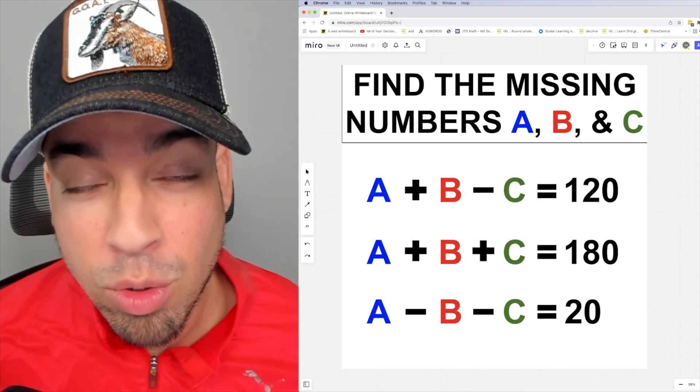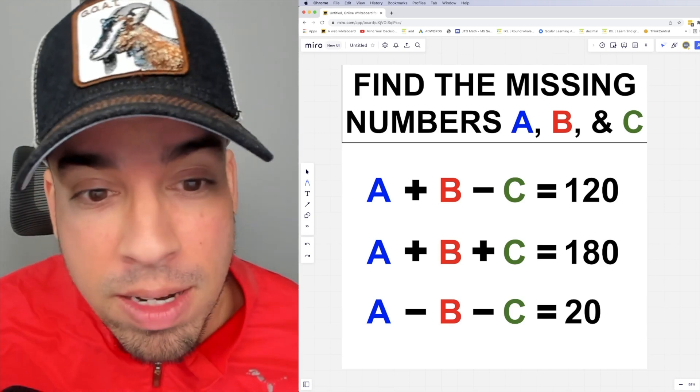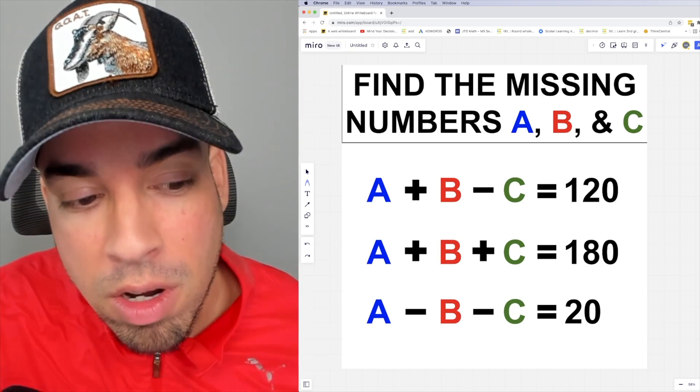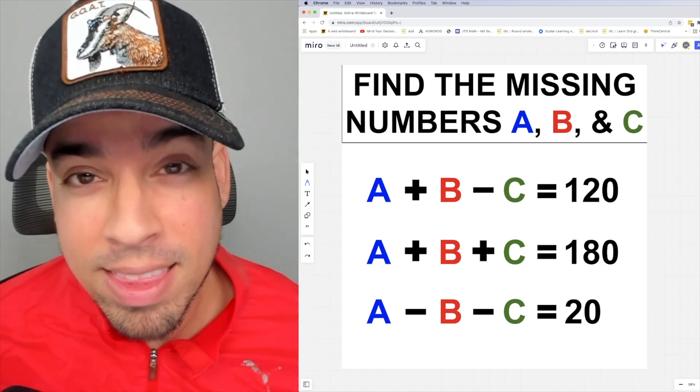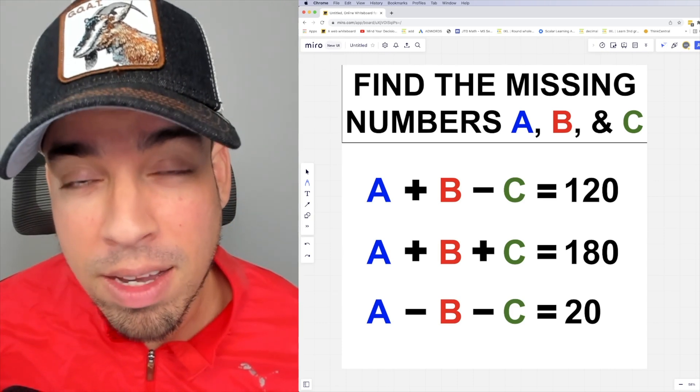What's up everybody and welcome back to another math puzzle. In this one, the question is as follows: find the missing numbers A, B, and C. What we've got are three algebraic equations with A, B, and C. Hit that pause button and see if you can figure it out. When you're ready, hit play and I'll give you the explanation.